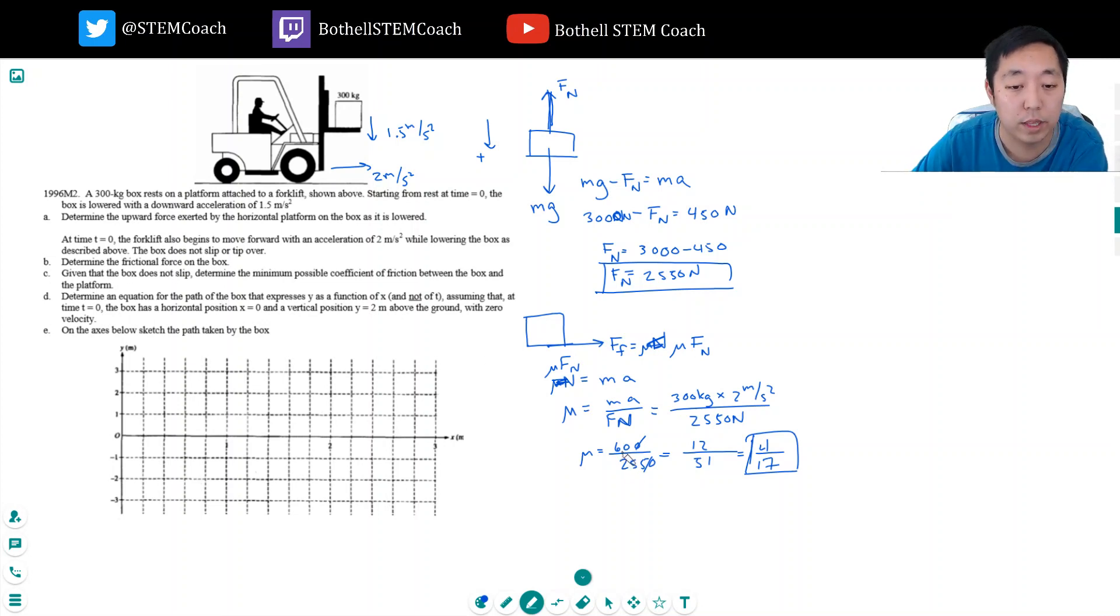You get a calculator on this test, so you can use a calculator, but I'm just lazy. Oh, they actually didn't want the coefficient. They want to determine the frictional force. My bad. This is part C. The frictional force was mu times fn, which is just equal to ma, which would have been 600 newtons. So that's the force of friction. That's B and C.